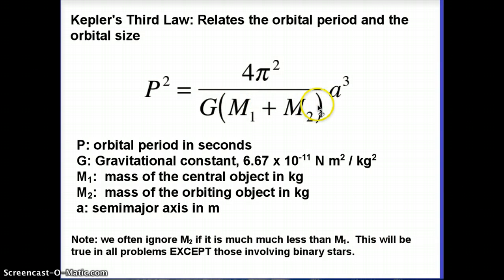The Sun is about a million times more massive than the Earth, so it's like adding a million plus one. Well, a million plus one is not that different from a million. So when we have a situation like that where M2 is much less than M1, we just ignore M2 altogether. You're going to see that I do that in a lot of the example problems.